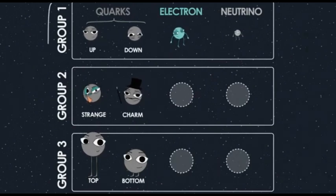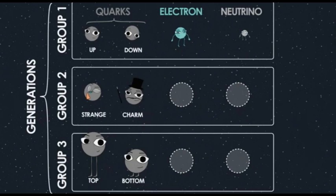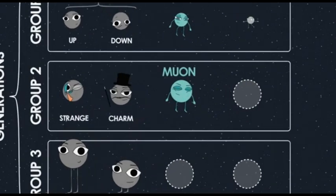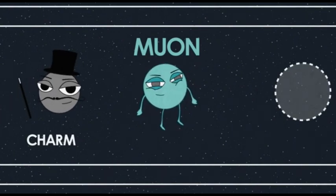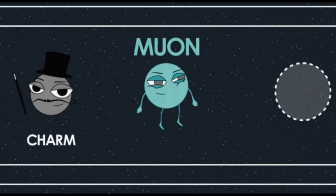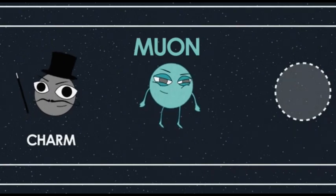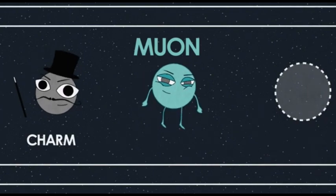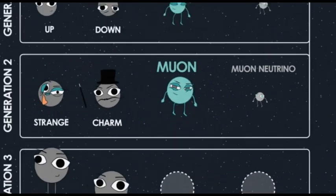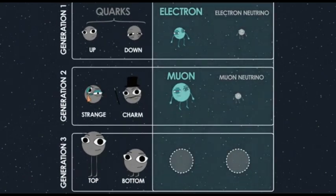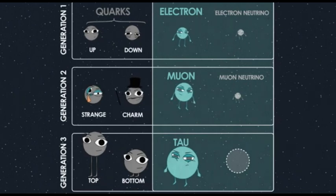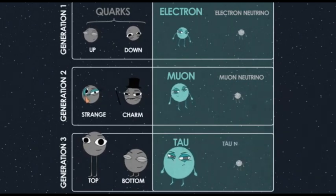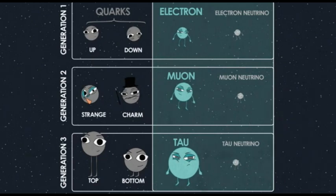These three groups are called generations, for no particular reason. There's also a thing called the muon, which is like a heavier version of an electron — when it first showed up in a particle accelerator, a physicist said 'who ordered that?' There's also a muon neutrino paired with it. Then there's the tau, an even heavier and shorter-lived electron, paired with the tau neutrino.